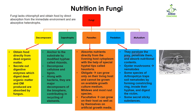Next come the predators. Predators paralyze their prey, then penetrate and absorb the nutritional content. For example, the oyster mushroom attacks nematodes — the nematode is their prey. Additionally, some species of Arthrobotrys trap soil nematodes by forming constricting rings, which keep the nematodes restricted and prevent them from escaping.